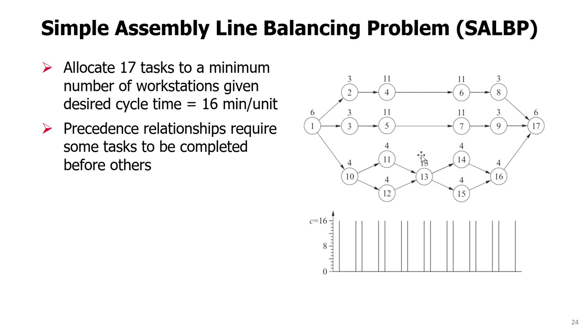Those tasks, in addition to having some processing time, which is shown here with the number above each node - the number inside is just an index of the task. The tasks also have dependencies, which we call precedence relationships.